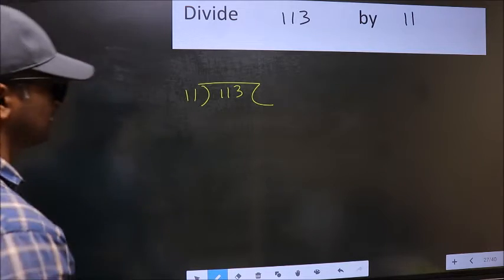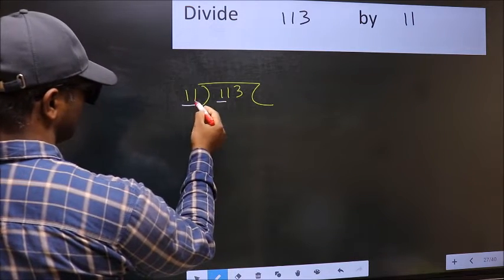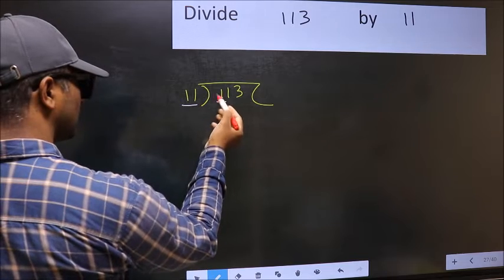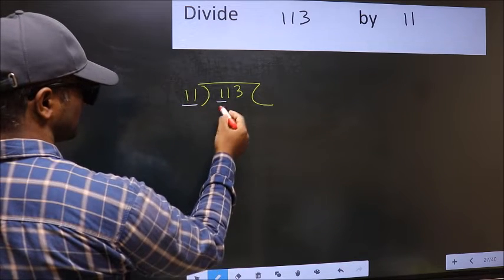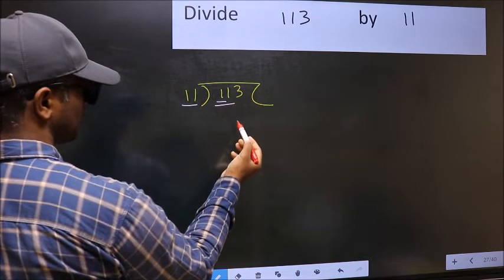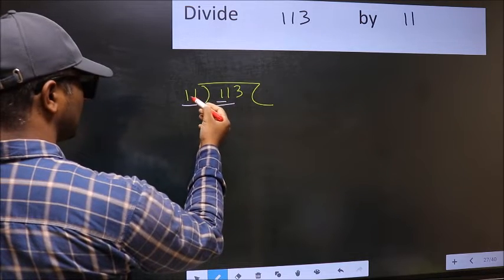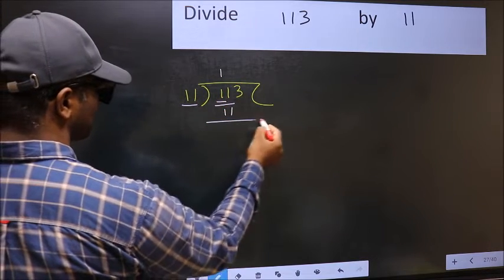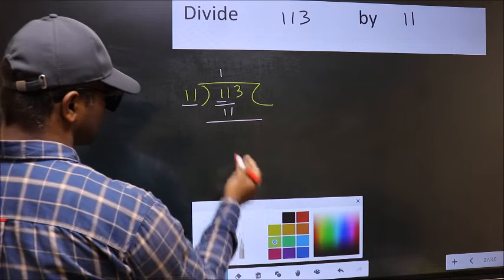Next, here we have 1 and here 11. 1 is smaller than 11, so we should take two numbers: 11. When do we get 11 in 11 table? 11 once, 11.